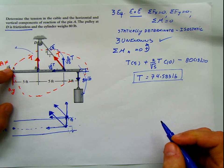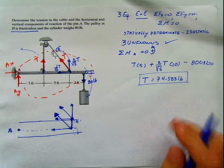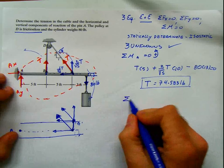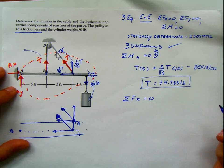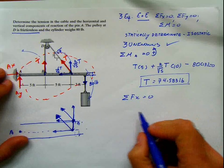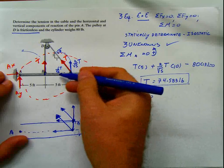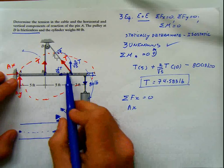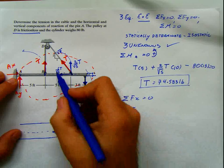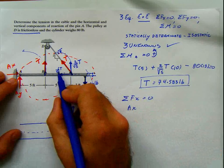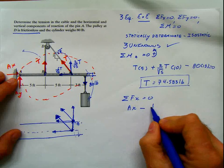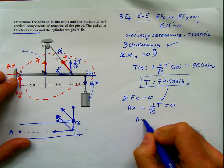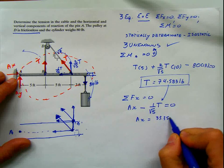First, done. We have the tension. What else do we need? We need the reactions Ax and Ay. For calculating Ax, we do summation of forces in x equals 0. We have Ax and the horizontal component of the tension, which is 1 divided by square root of 5 times T, going to the left. Setting that equal to 0 and plugging in T, we can solve for Ax, which equals 33.354 pounds.